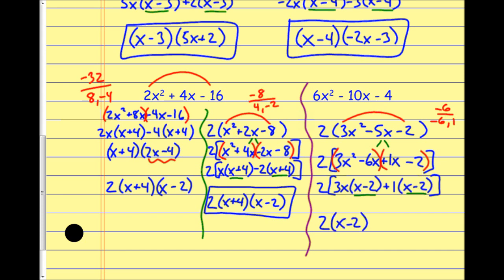That's factoring trinomials: build a bridge, find two numbers that multiply to the bridge value but add to the middle coefficient, split up the middle term, and do factoring by grouping.